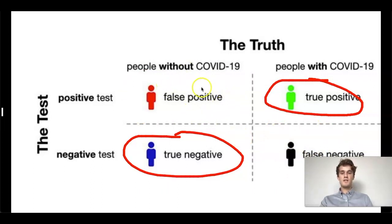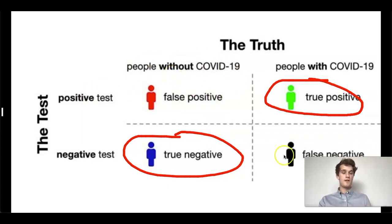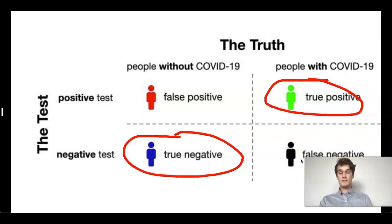False positives are when we have a positive test but the condition is not present, like a false positive on a COVID test. And a false negative on a COVID test would be that the person actually does have COVID and they test negative. Usually in medicine, like in cancer detection, false negatives are more important and we should watch out for those more than false positives.